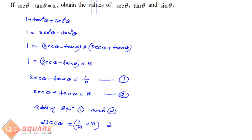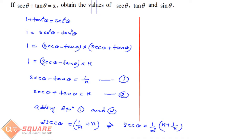So we can say sec θ = ½(x + 1/x). That's how we get the value of sec θ. Now we will subtract equation 1 and 2.